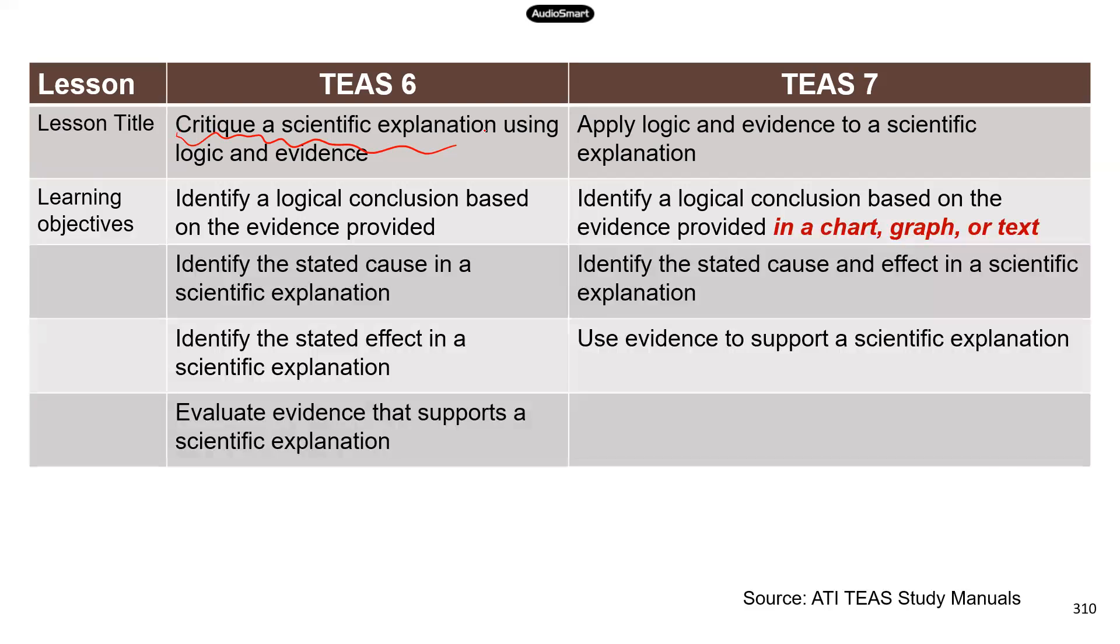There is a little bit difference for the first learning objective. You can see that in TEAS 7, it specifically says identify a conclusion based on the evidence provided in a chart, a graph, or text. So the evidence could be in any of these three formats. I don't think this is necessarily new, but I do like that it's being more specific now. And the rest of the learning goals are about identifying the stated cause or effect for a scientific explanation and evaluate whether the evidence supports or doesn't support this particular scientific explanation.